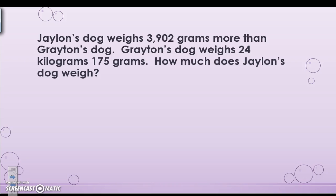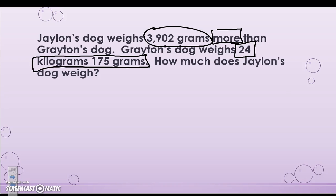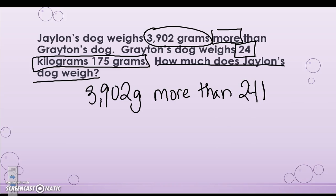Let's try one more together, then I will leave some problems for you to practice. Jalen's dog weighs 3,902 grams more than Grayton's dog. Grayton's dog weighs 24 kilograms 175 grams. How much does Jalen's dog weigh? So we know that Jalen's dog is 3,902 grams more than 24 kilograms 175 grams. If it's more than, these words tell me I need to add.